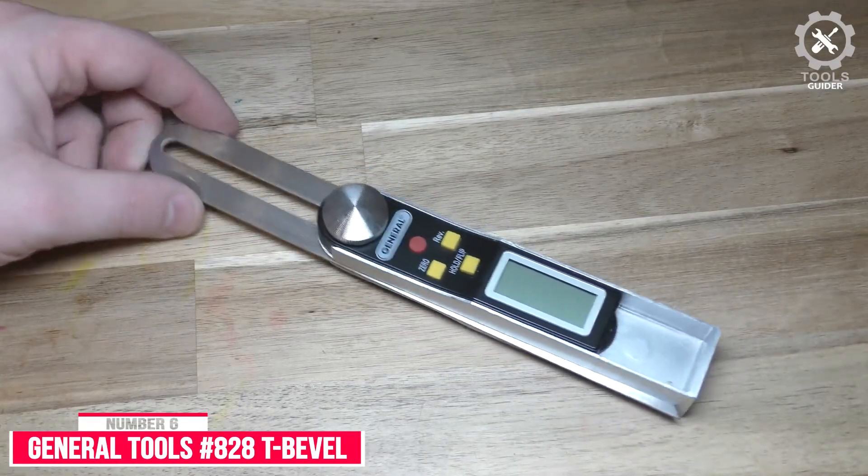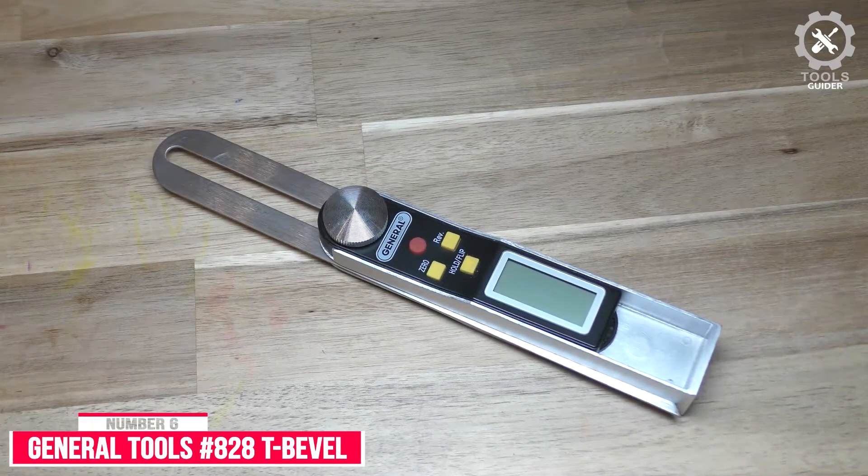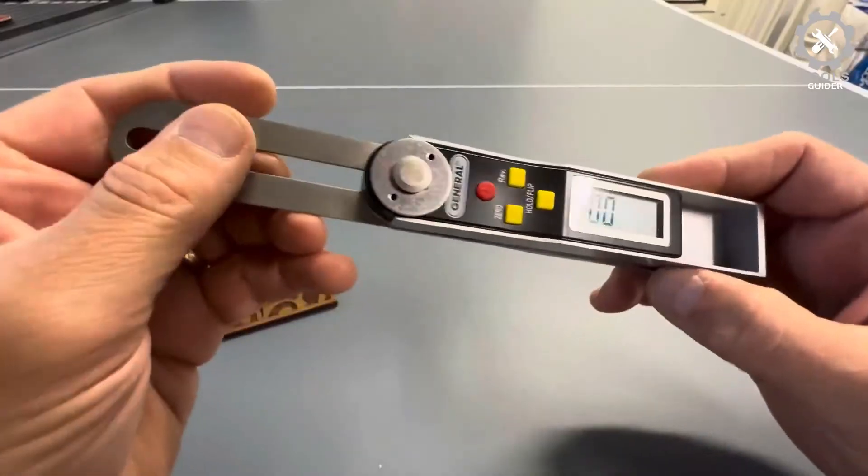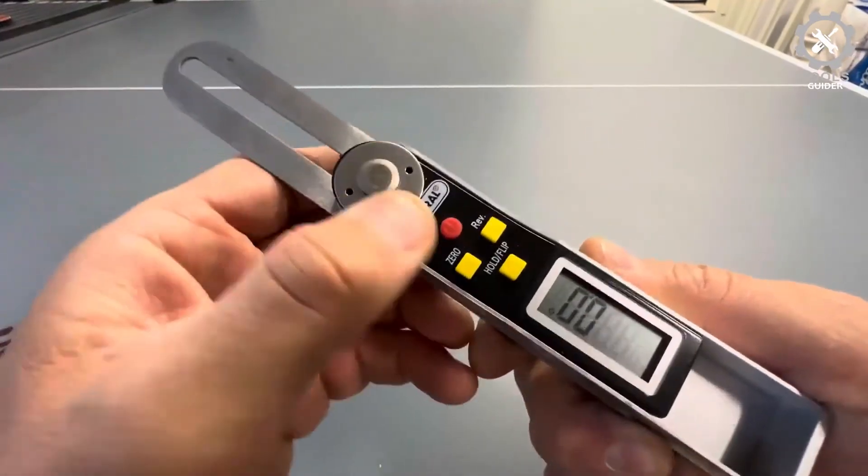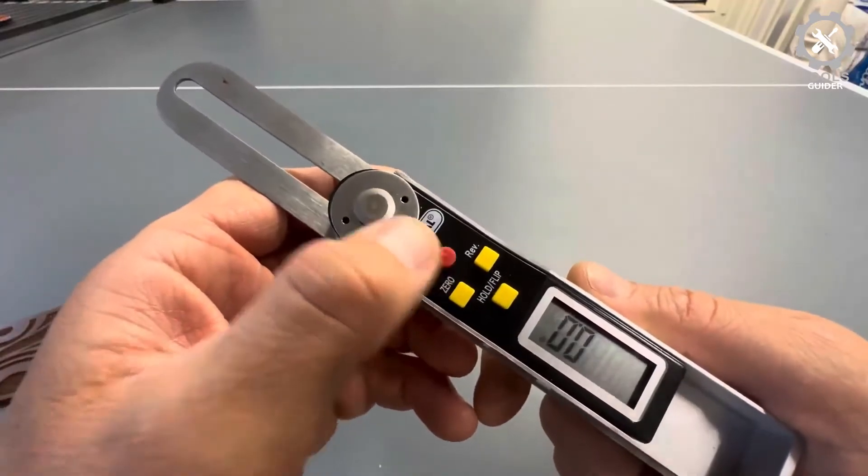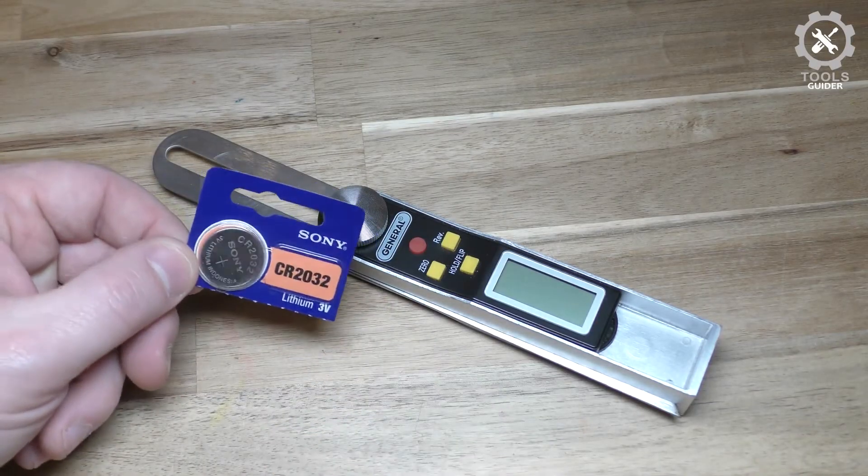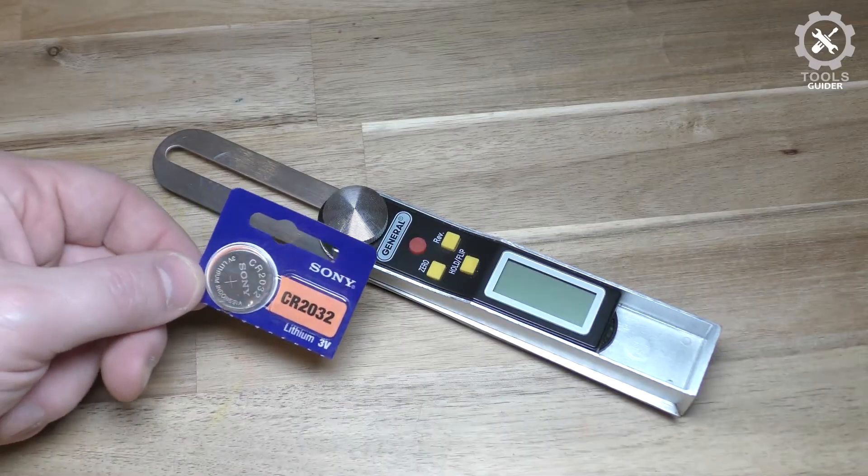The General Tools Number 828 T-Bevel Gauge and Protractor if you are looking for a digital protractor for domestic use and minor works, this is the ideal product for you.